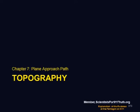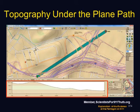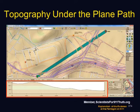Let's take a look at the topography as the plane approached. This is the area underneath the plane path. The top part is from Delorme Topo USA, going across the path that we've talked about, and you can see the altitude of the terrain.